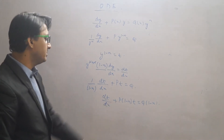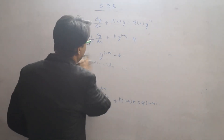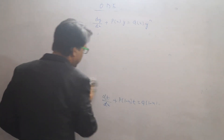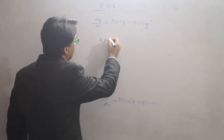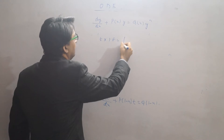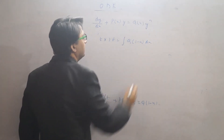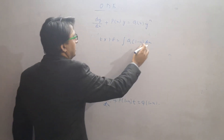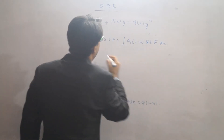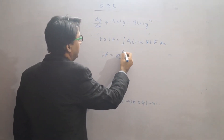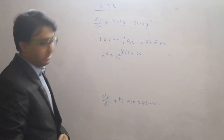Can't we see that this has been reduced into linear form? Yes, it has been reduced into linear form. So what would be the general solution for this? The general solution involves the integrating factor times Q times (1 minus n) dx. The integrating factor is e to the power of the integral of P times (1 minus n) dx.